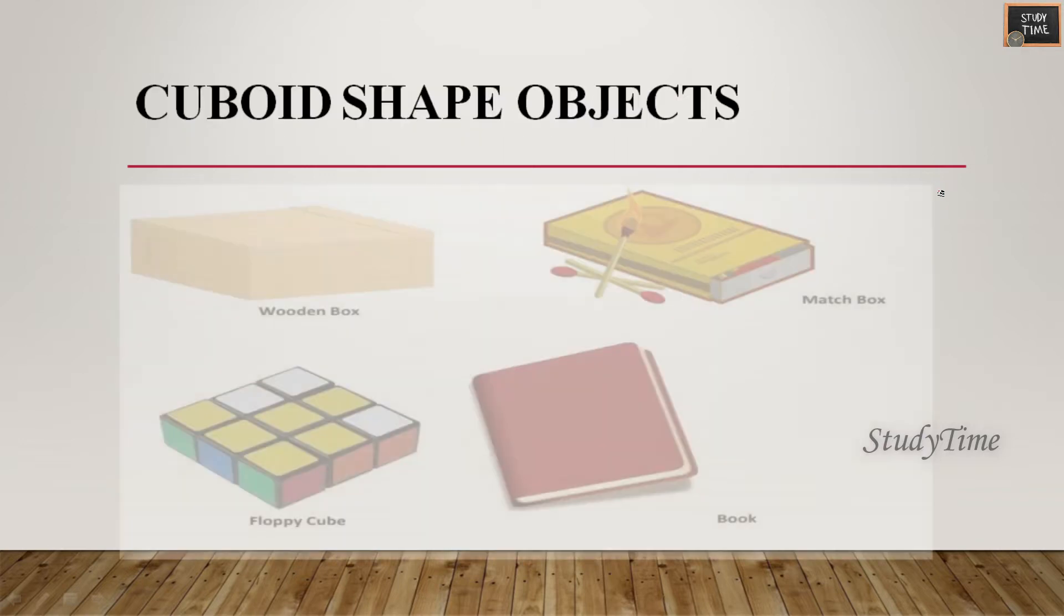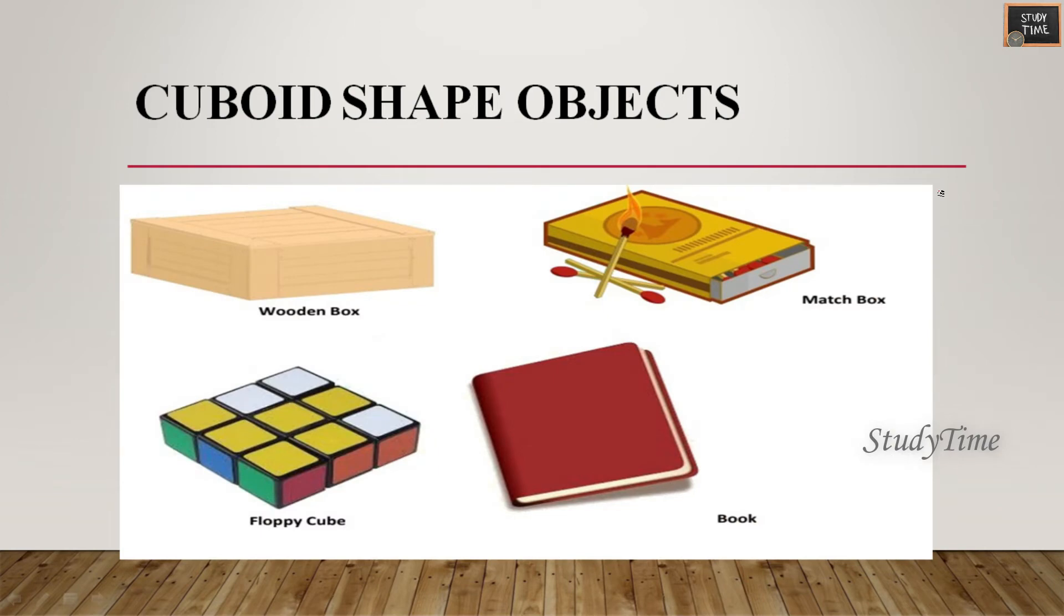Cuboid shaped objects or wooden box, match box, the normal book you have - all these are cuboid shaped objects.